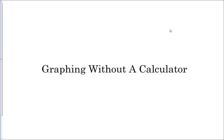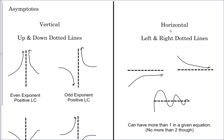Graphing without a calculator. To graph without a calculator, let's do a quick review of asymptotes. You have two types: vertical asymptotes and horizontal asymptotes. Verticals are up-and-down dotted lines and horizontals are left-and-right dotted lines.